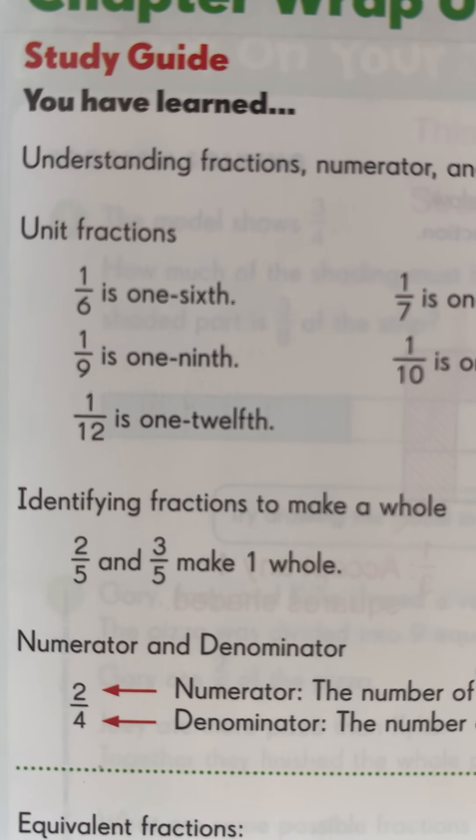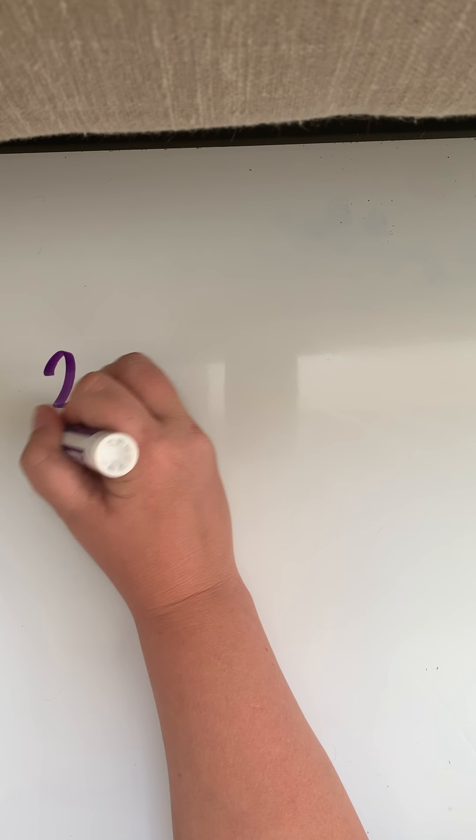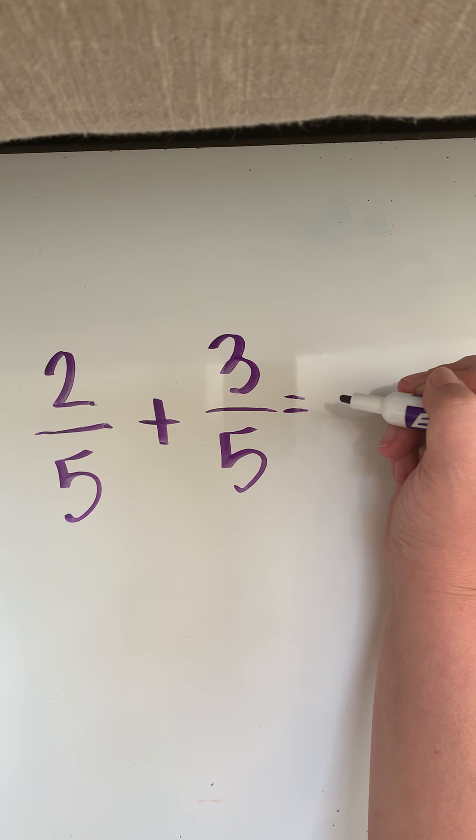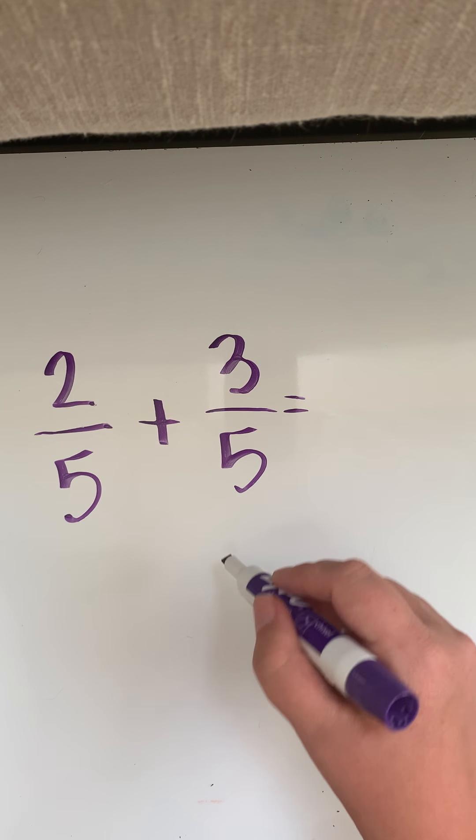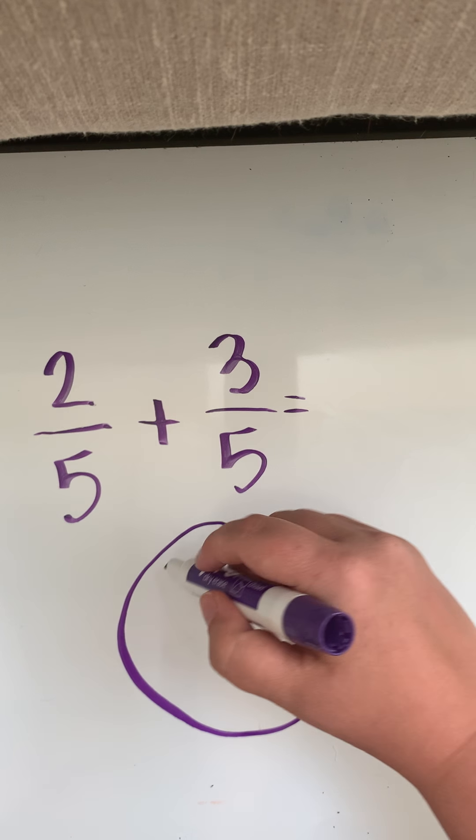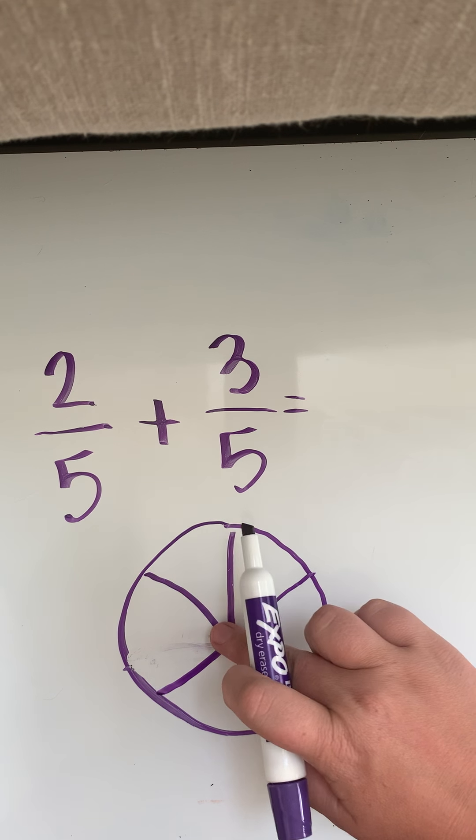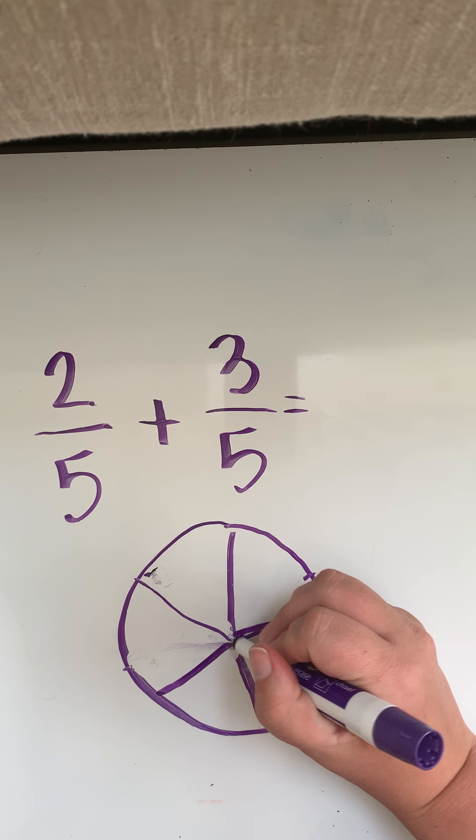We also need to see that some fractions do make a whole. Now we haven't really talked too much about this but I want you to understand that if I have two-fifths and I have three-fifths, when I add them together they're going to equal a whole. My denominator is five, right? So I am going to draw a circle and I'm going to split it up into five equal parts the best I can.